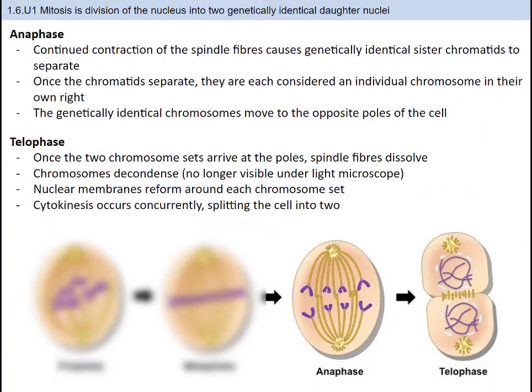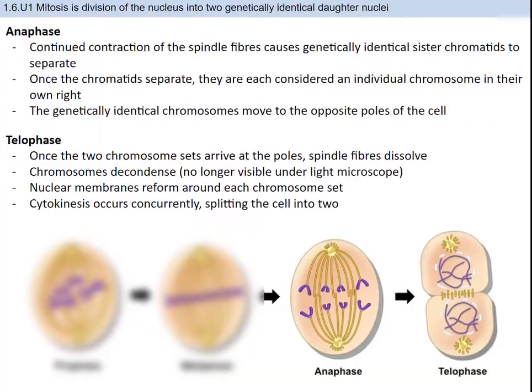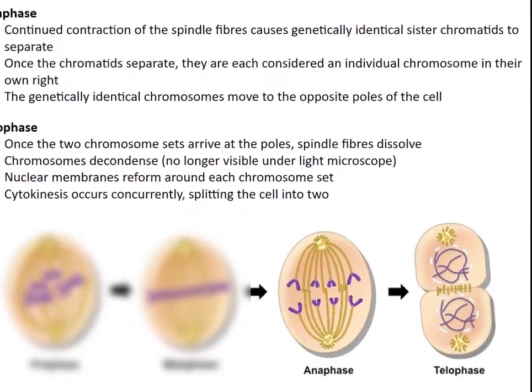In anaphase, continued contraction of the spindle fibers causes genetically identical sister chromatids to separate. Once the chromatids separate, they are each considered an individual chromosome in their own right. The genetically identical chromosomes move to opposite poles of the cell. You can see the spindle fibers in white, looking like they're reeling in the chromosomes back to the poles.